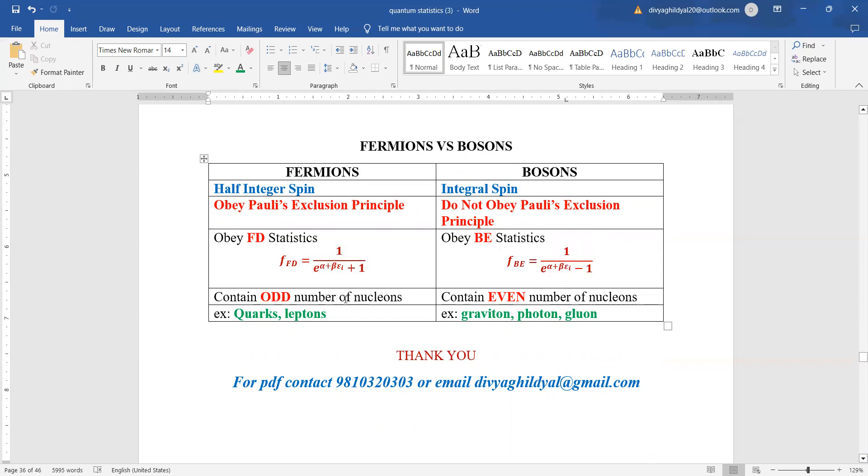Fermions contain odd number of electron nucleons. Bosons contain even number of nucleons. Famous examples of fermions are quarks and leptons. For bosons, graviton, photon, and gluon. Thank you.